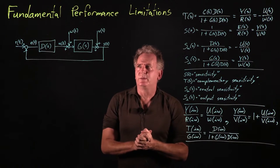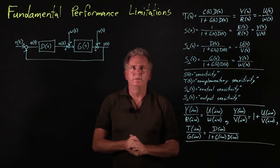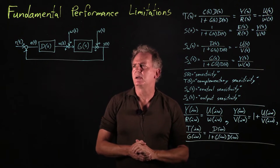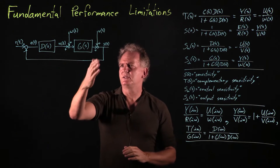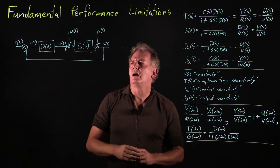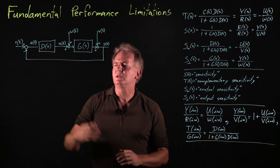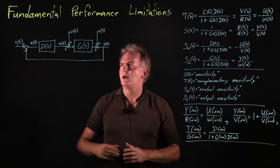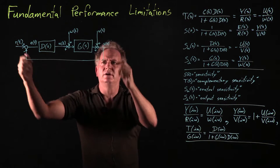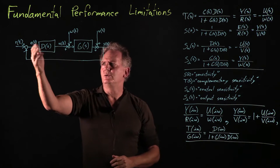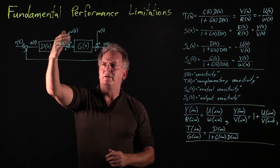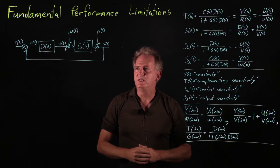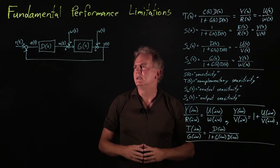In this video I'd like to explore the issue of fundamental performance limitations. In our introduction to feedback, we identified this as our feedback loop. G of S is the plant, D of S is the controller that we'll design, both in transfer function form. We have a reference input and our plant output, a control signal U, an error signal E, a state disturbance W coming in, and a measurement noise V coming in, both of which can tend to disrupt the loop.